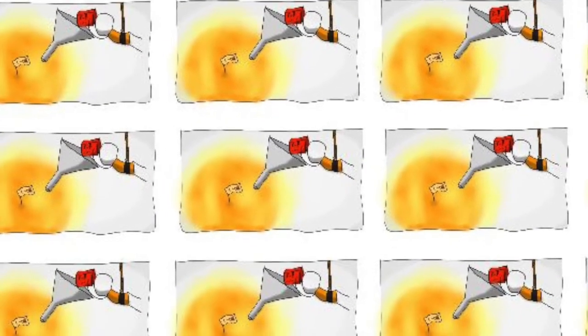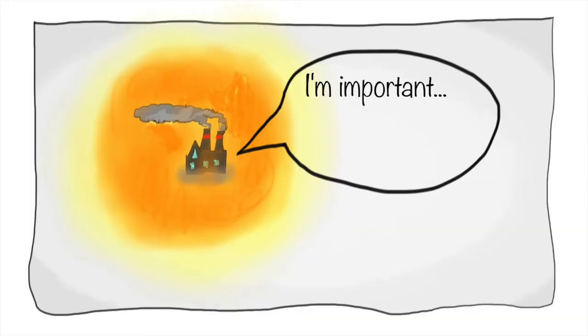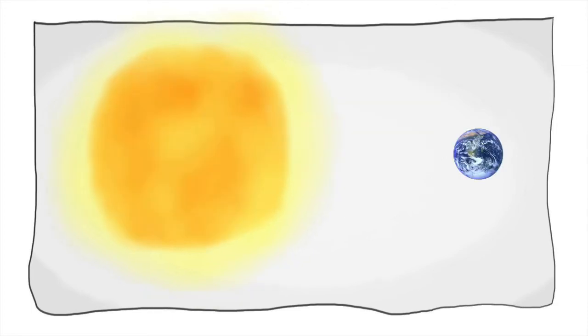But amazingly, all this occurs in the core 9.2 million times per second times 10 to the 37th power. All this colliding converts 4.26 million tons of mass into energy every second, making the core one very hot reactor and not to mention an important one too, since it does keep us alive.